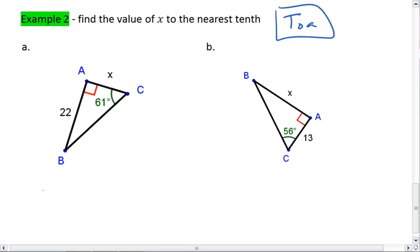In this first example, we're given angle C, so we're going to take tangent of angle C, tangent of 61 degrees, which is going to equal the opposite leg, 22, over the adjacent leg, x.